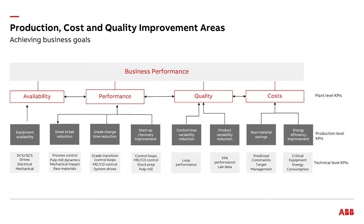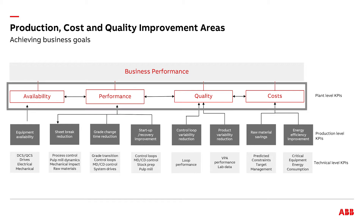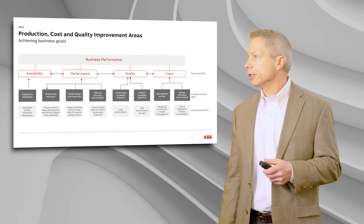We've really tried to make this pragmatic, and there are four different areas that we focus on. One is availability. The second is performance — the production of a paper machine or a pulp mill. Third is quality — the variability in the sheet itself. And then the fourth is cost: how do we produce at the lowest cost?